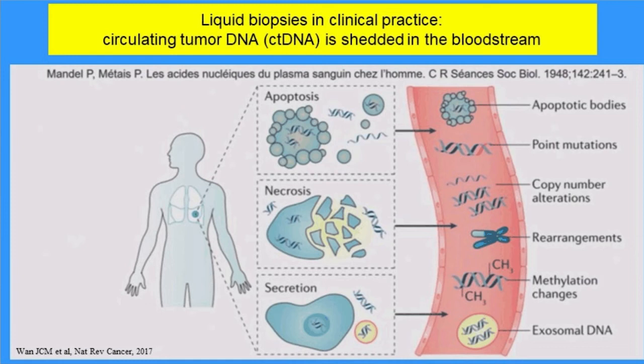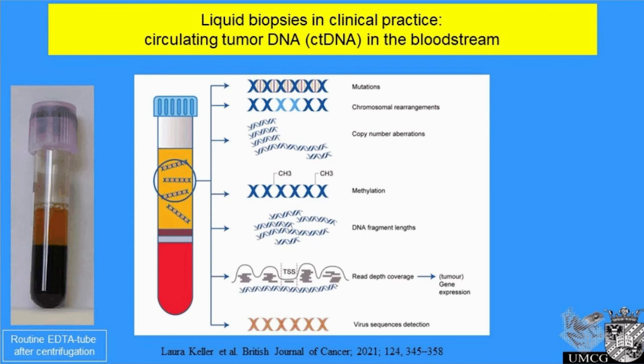In the bloodstream, in addition to many components, we also have tumor-specific DNA from the patient, which can be used for mutational testing. If we take a simple blood draw from a patient — here you see an example of a blood tube — and do a centrifugation step, we separate the cell-free plasma fraction in yellow from the erythrocytes and leukocytes. That cell-free plasma fraction contains many components, including the tumor-specific DNA, so we can very easily get our hands on DNA from the tumor shed into the bloodstream.